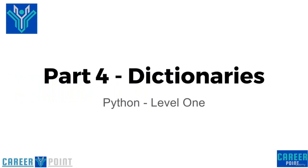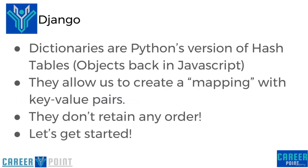Hello everyone and welcome to part 4: Dictionaries. Dictionaries are Python's version of hash tables — back when we were working with JavaScript, these were known as objects. They allow us to create a mapping of key-value pairs. Something really important to note about dictionaries is that they do not retain any order — they only have a key-value pair system. Let's get started learning about the most important aspects of Python dictionaries.